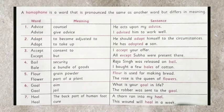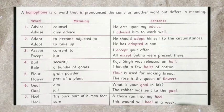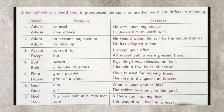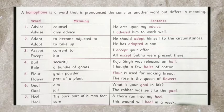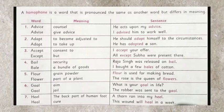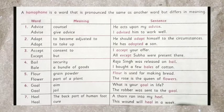Next, we have 'accept' and 'except'. Accept, A-C-C-E-P-T, means to consent to. A sentence could be: I accept your offer. Except, E-X-C-E-P-T, means 'but'. Sentence: All except Shubha were present there.